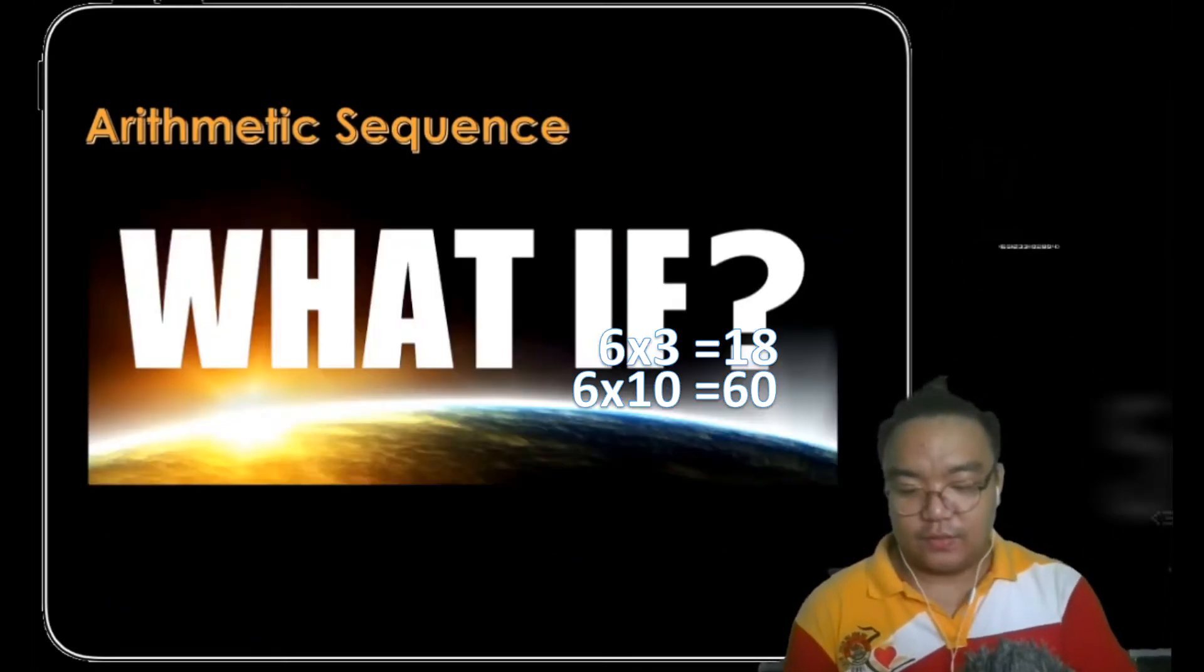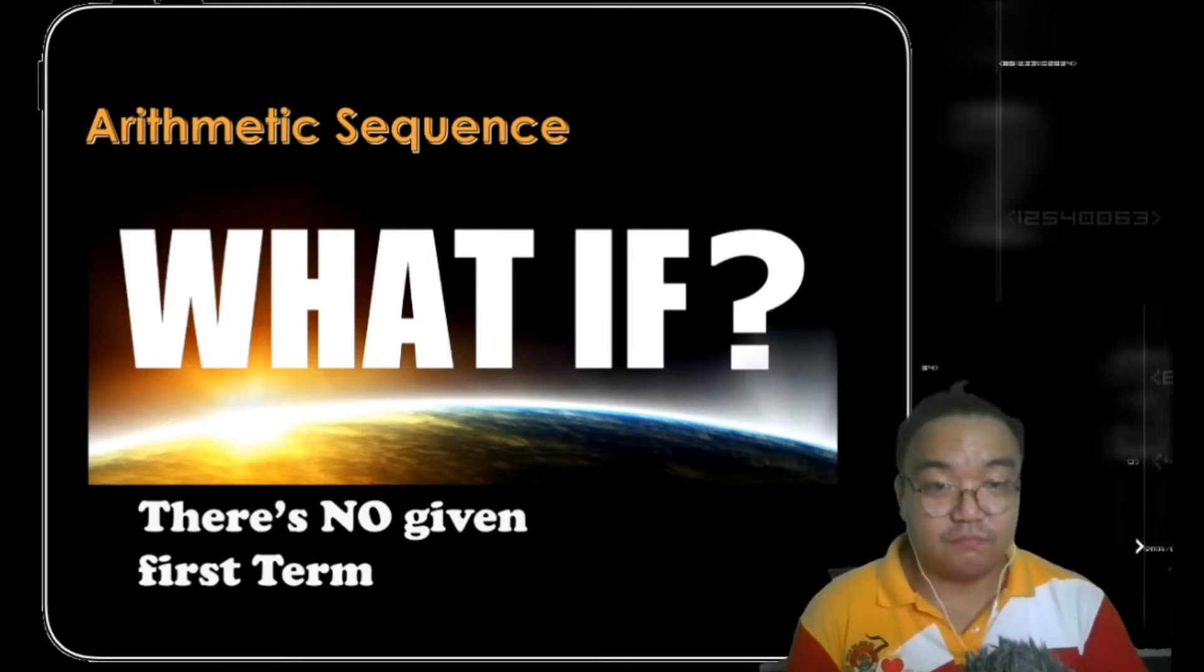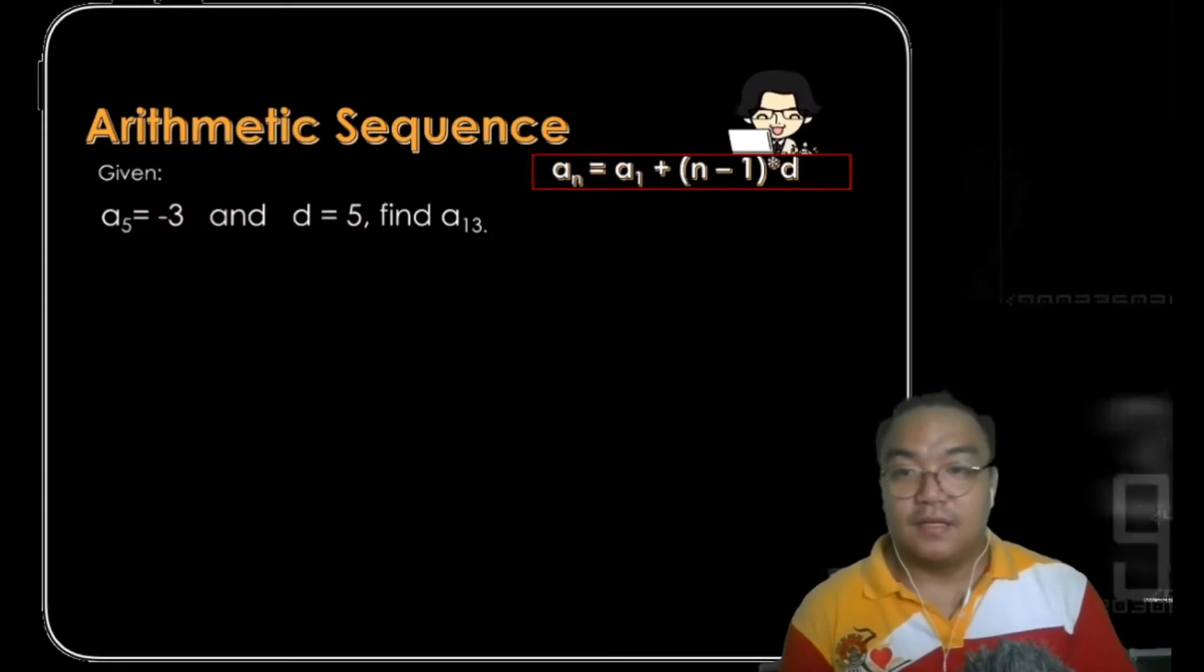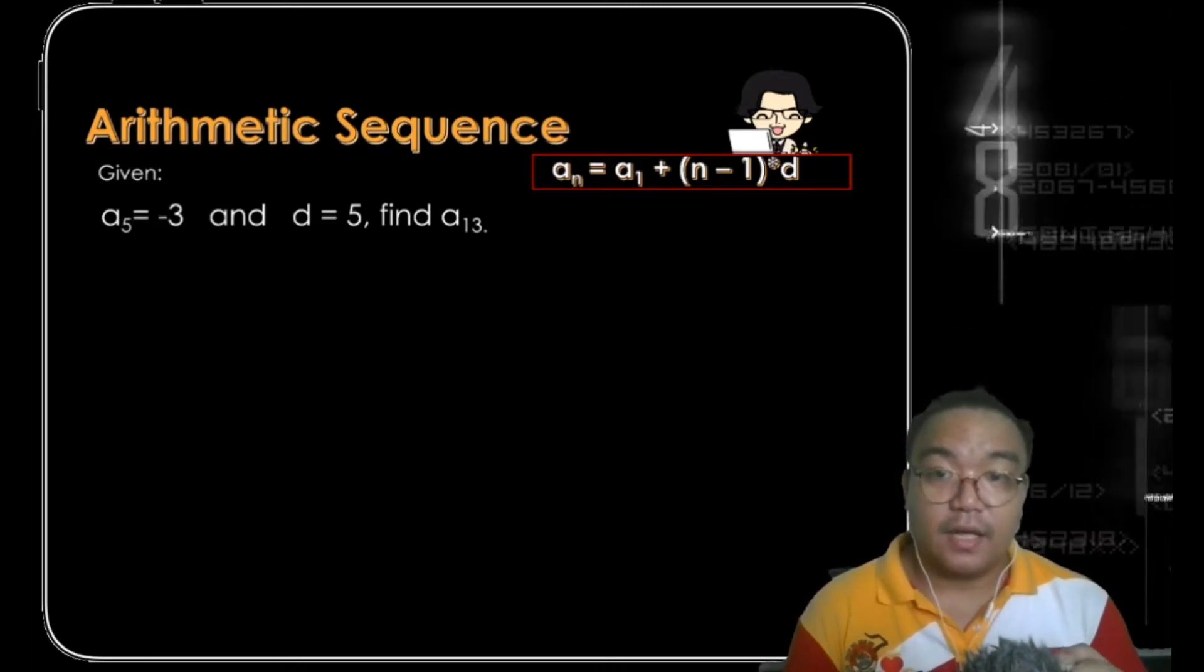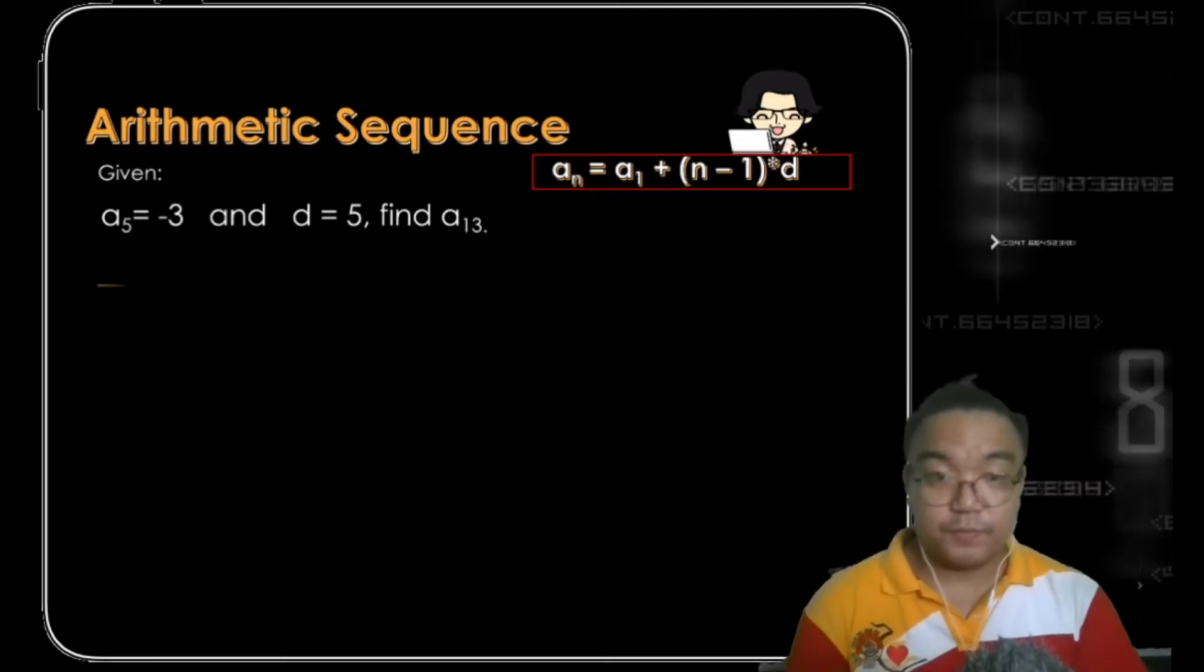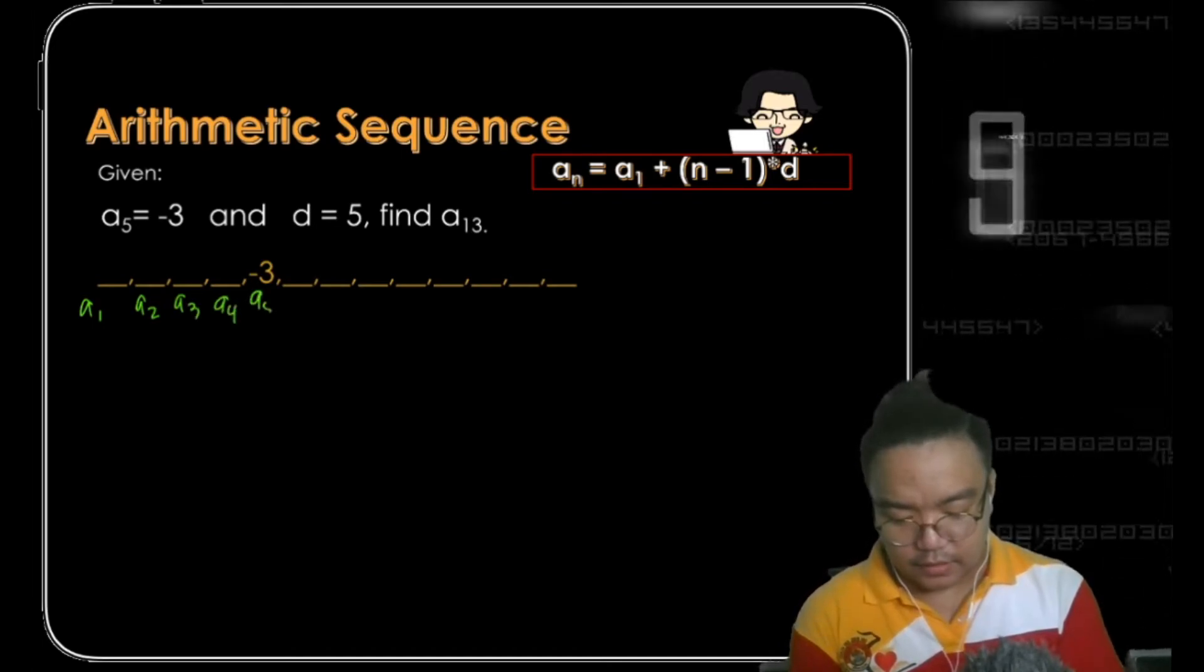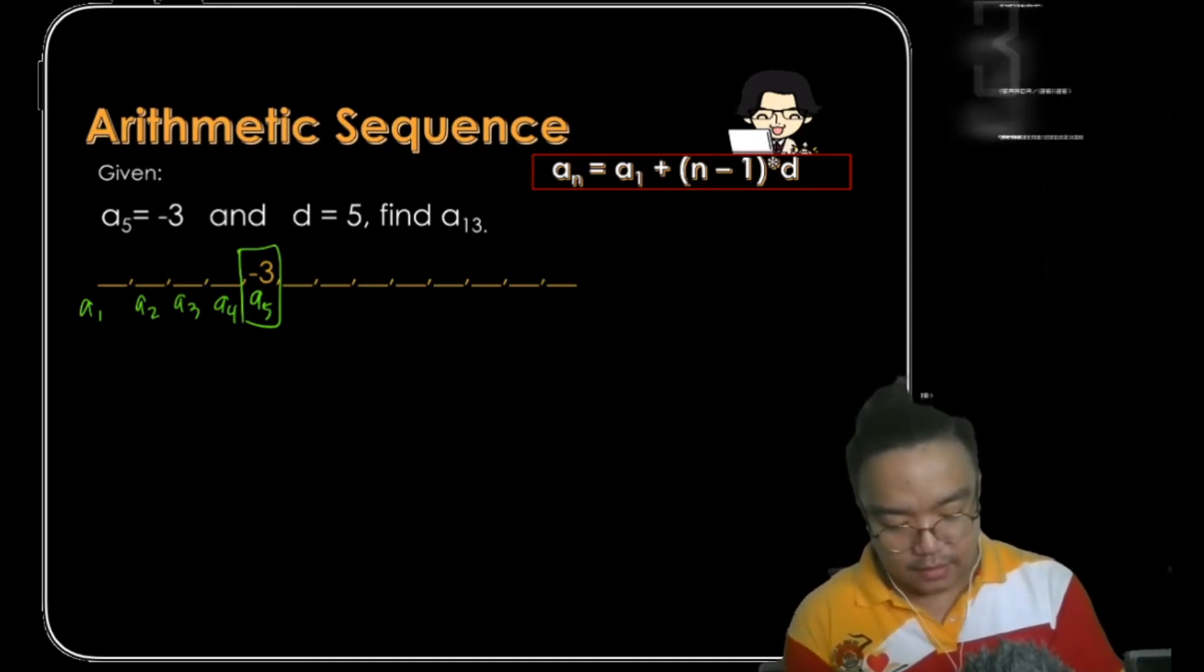What if there's no given first term? Let's try another example where the first term is not given. Given a sub 5, which is the fifth term, equals negative 3, and a common difference is 5, find the 13th term. Most people tend to simply list it down like this. This is our first term, second term, third, fourth, and there's the fifth term which is negative 3, and then we just have to continue adding 5 to get the 13th term.